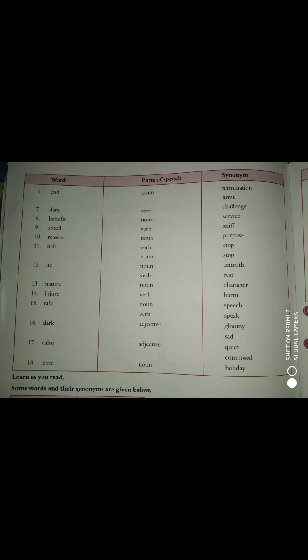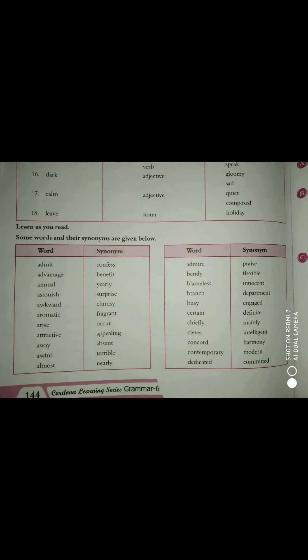Nature — noun — meaning: character. Injure — as verb — meaning: harm. Talk — noun — meaning: speech; as verb — meaning: speak. Dark — adjective — meaning: gloomy. Calm — adjective — meaning: quiet. Leave — noun — meaning: holiday. Similarly, on pages 144 and 145, there are many words and synonyms given in the table. You have to read all of these words and remember them by heart.